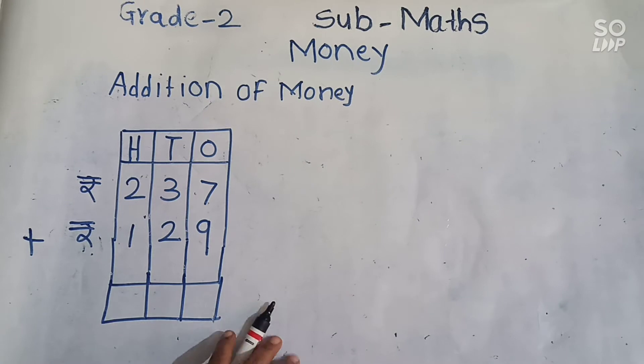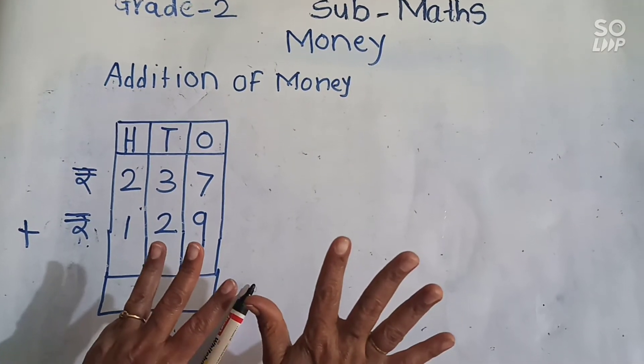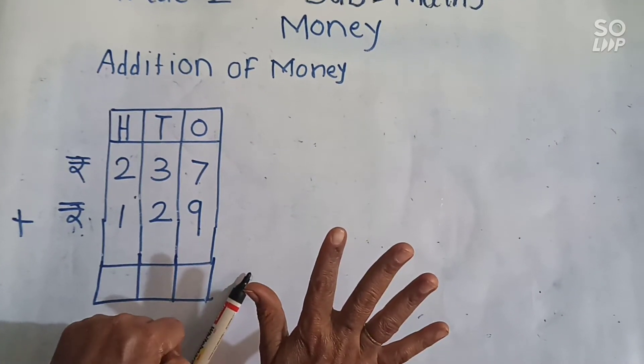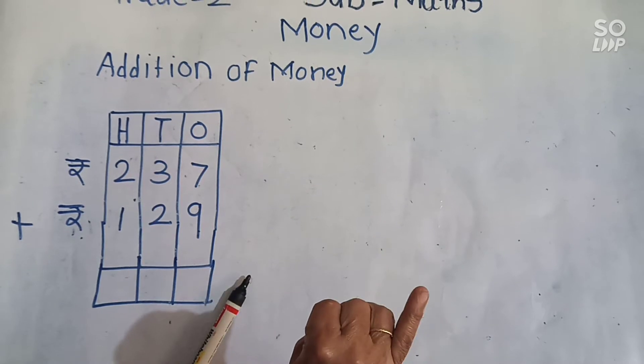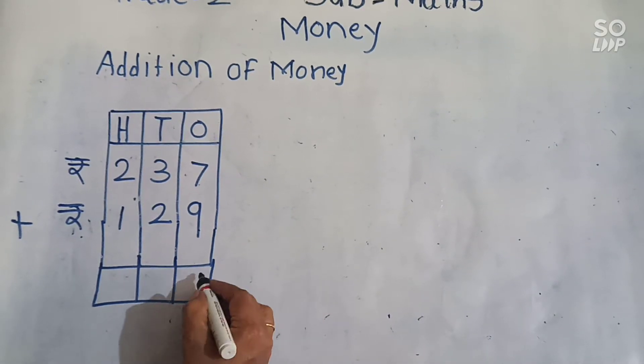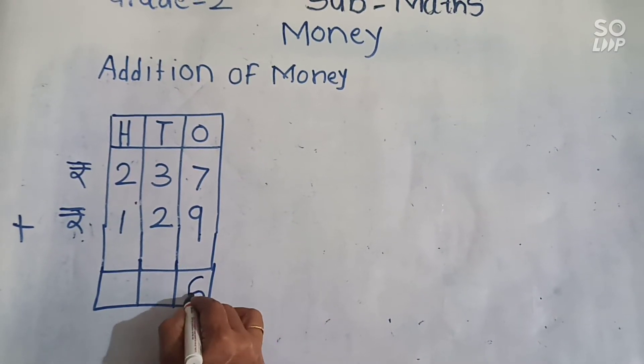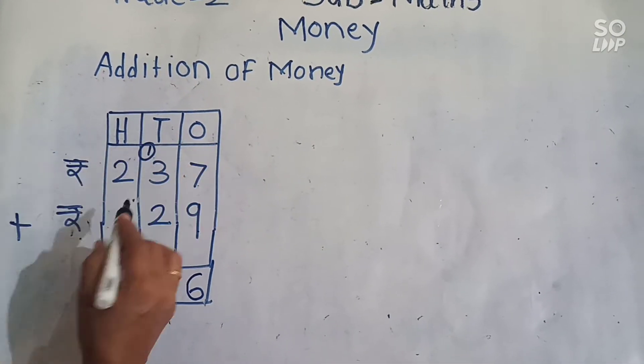Seven, eight, nine, 10, 11, 12, 13, 14, 15, 16. So 6 will become here and 1 we have to carry over.